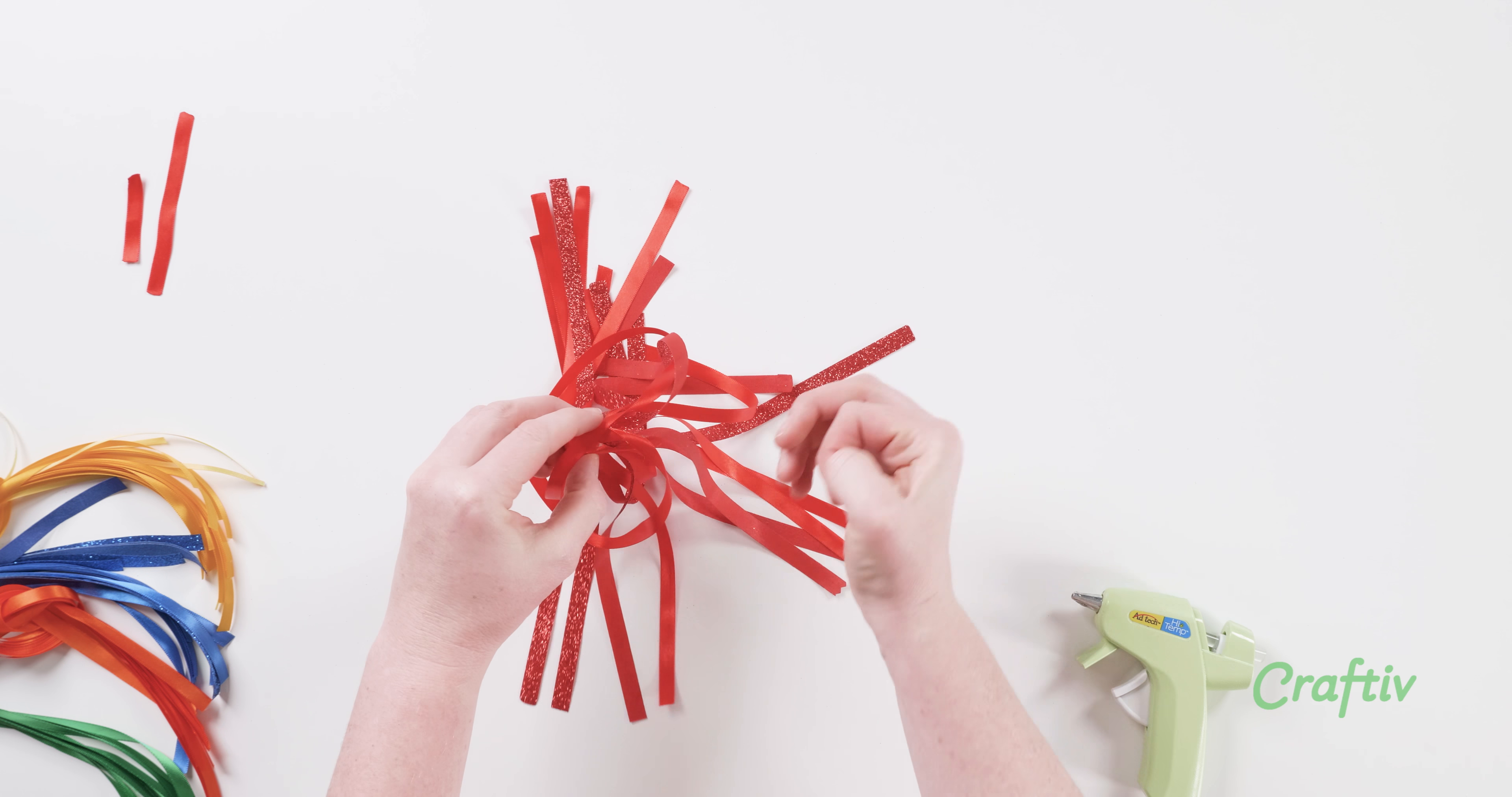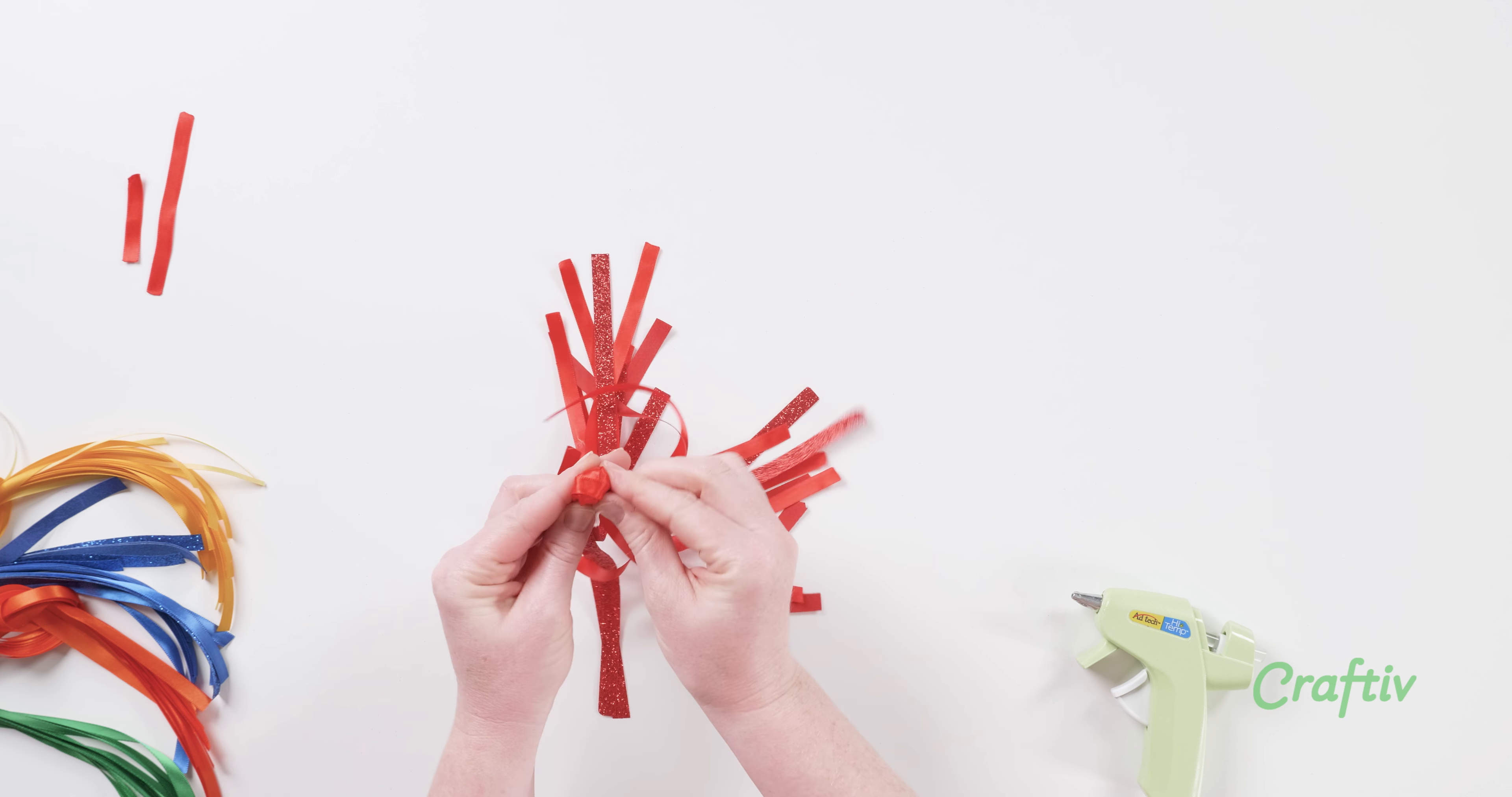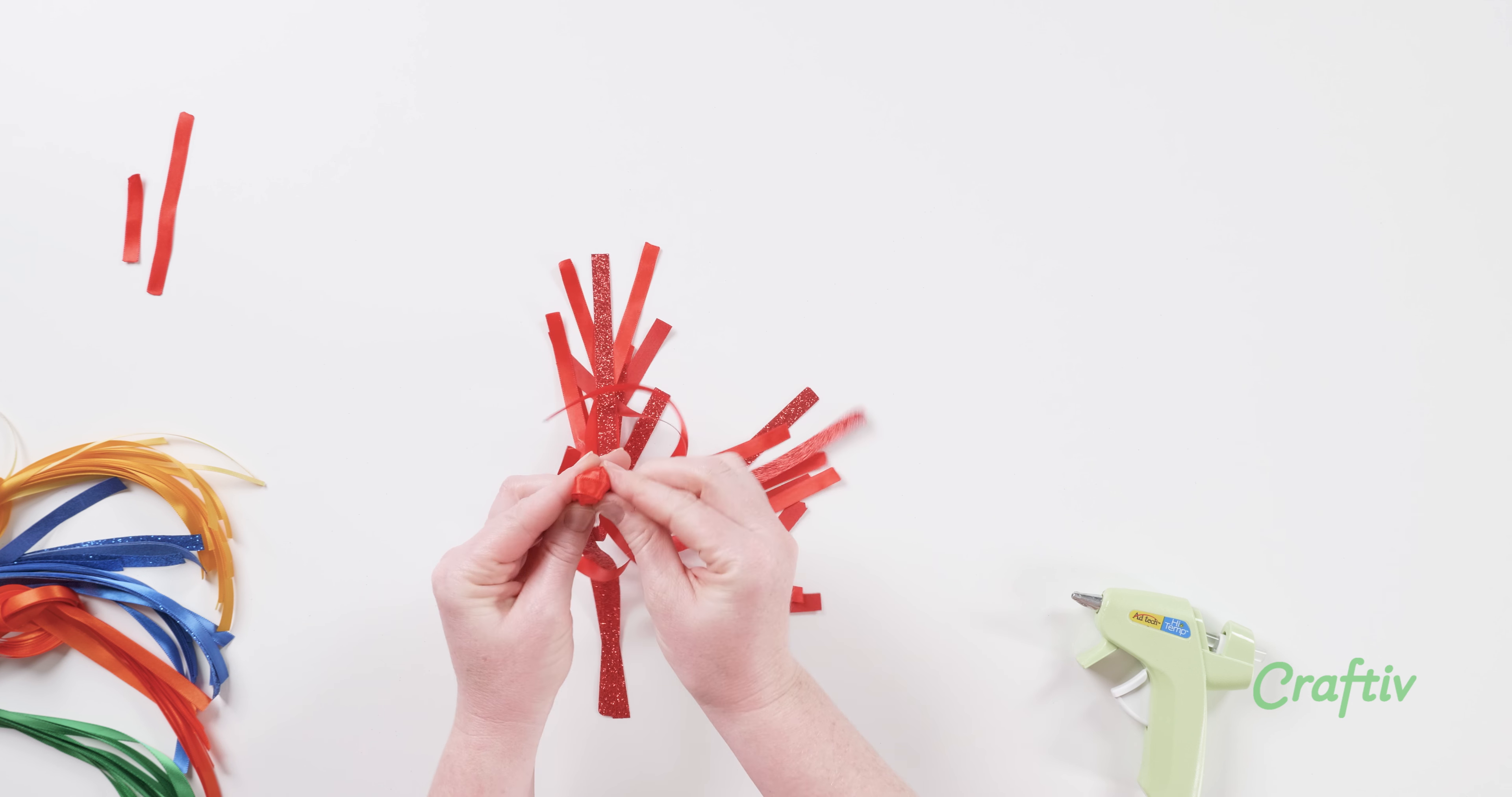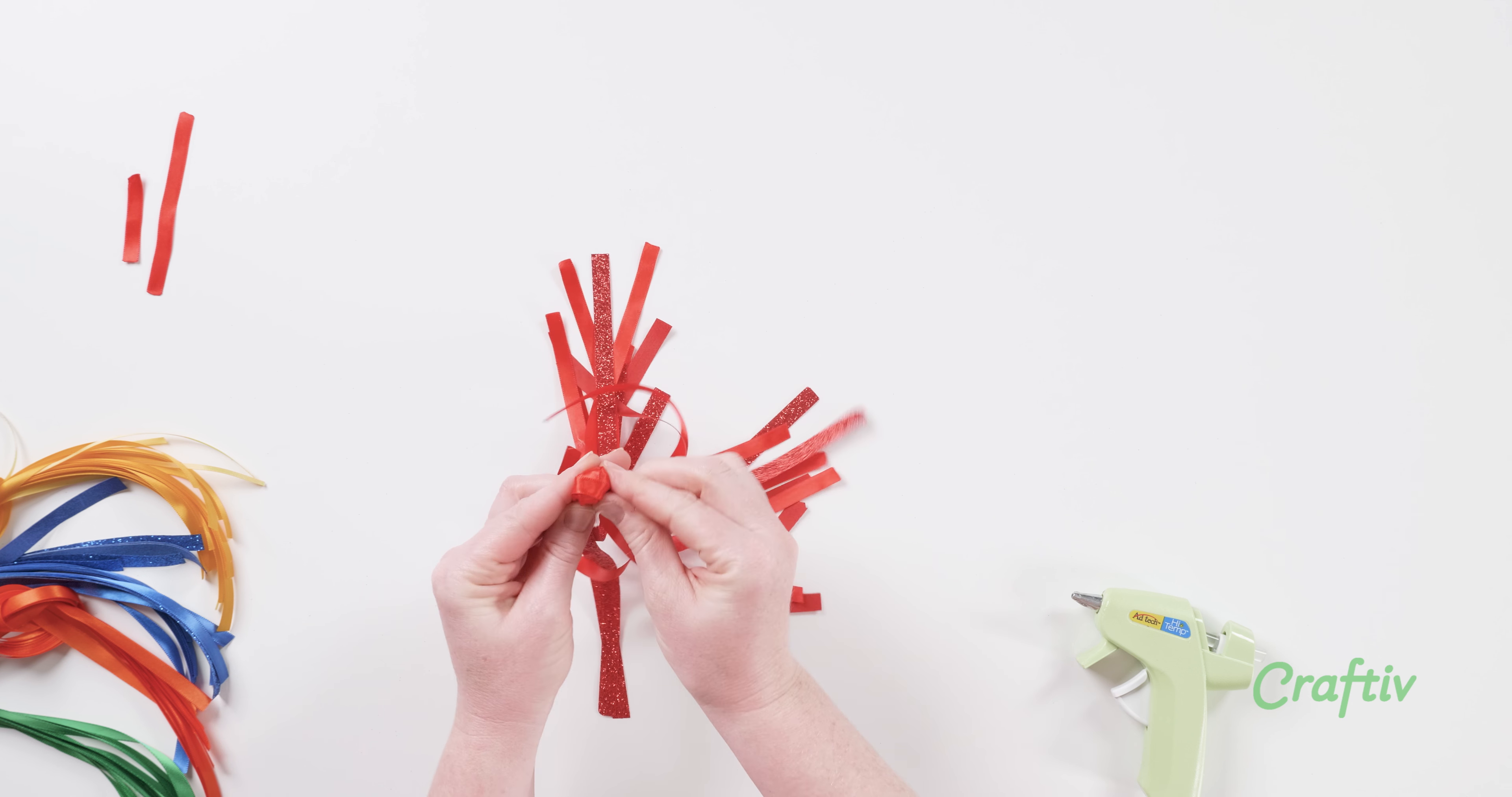The starburst is now done, so add a little glue in the center, then flip it over and start to create the top by pinching it together.